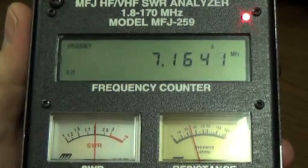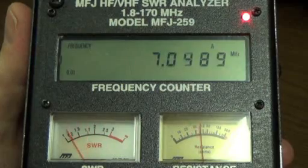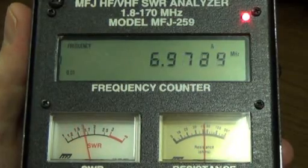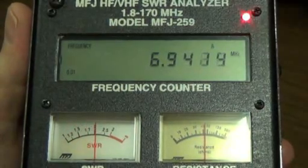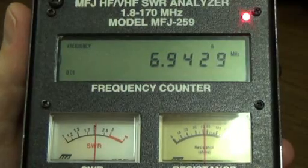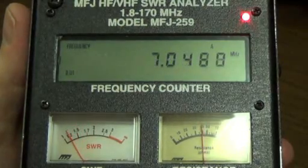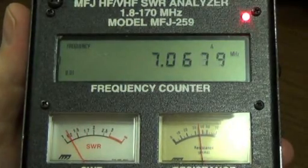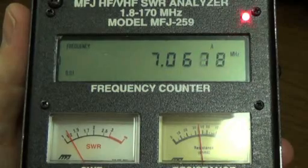Out of curiosity, checking my 2:1 point on the low end, it says 6.94. My resonant frequency is low. I could shorten the antenna and raise that resonant frequency a little bit.